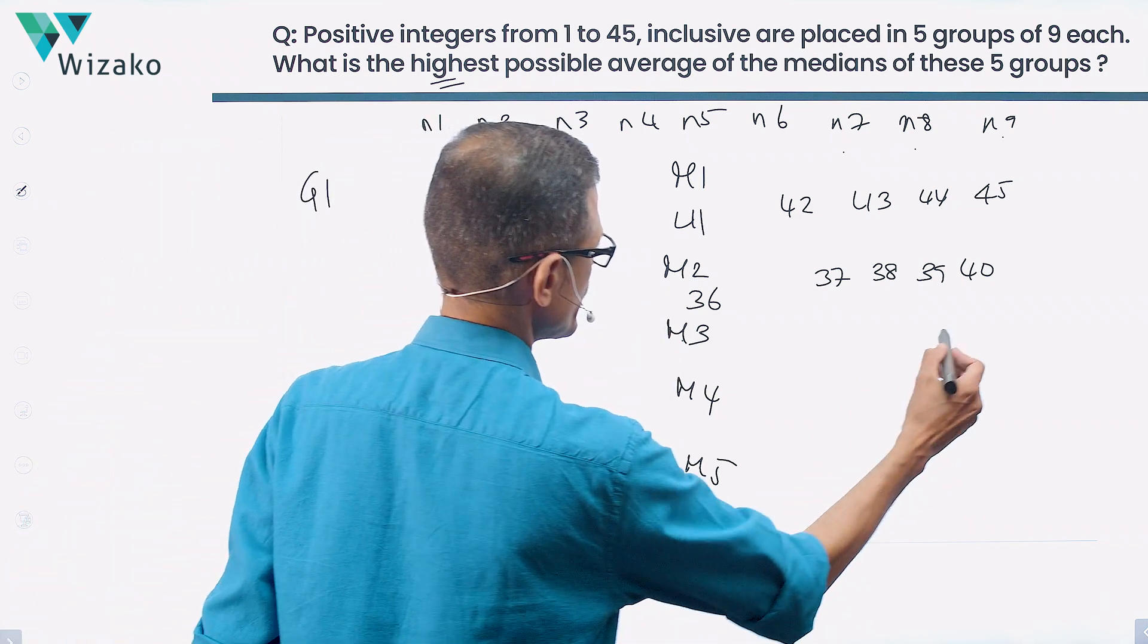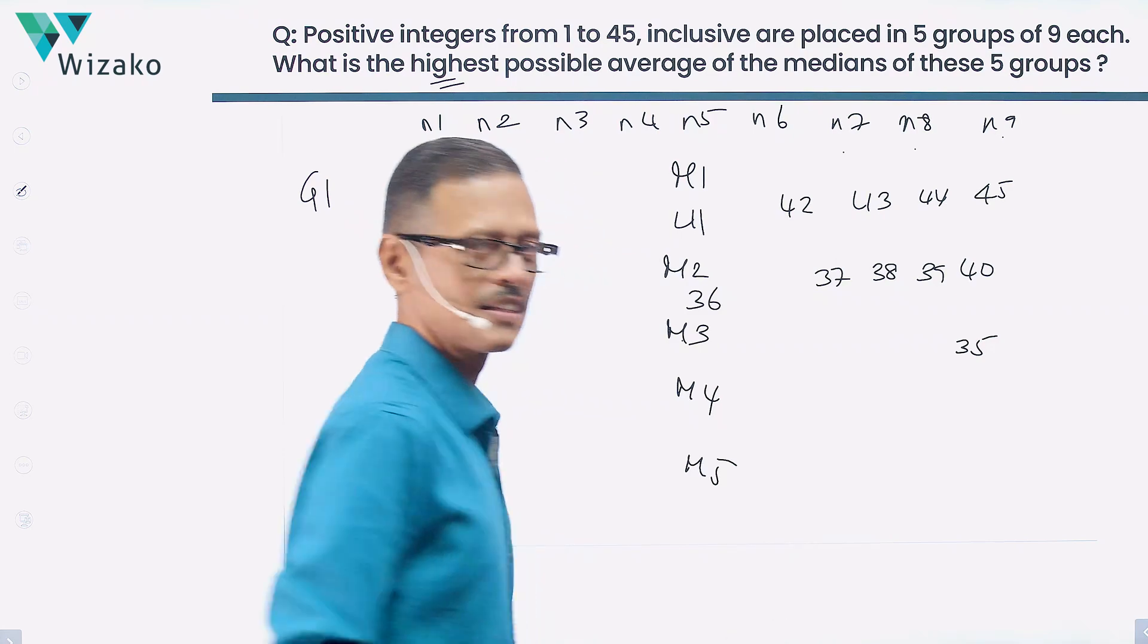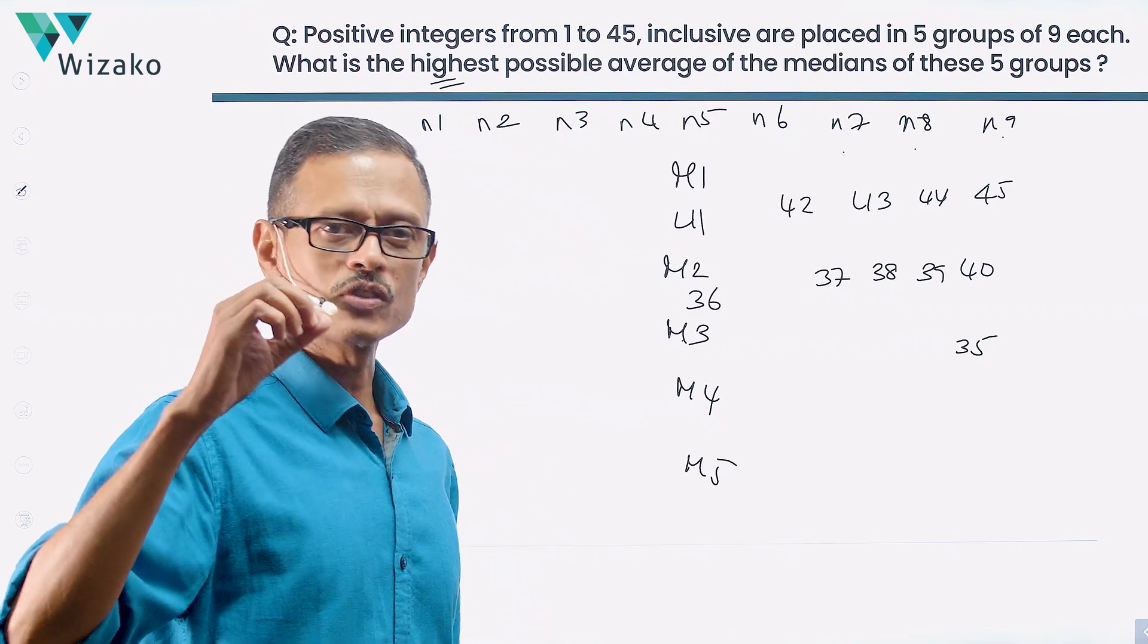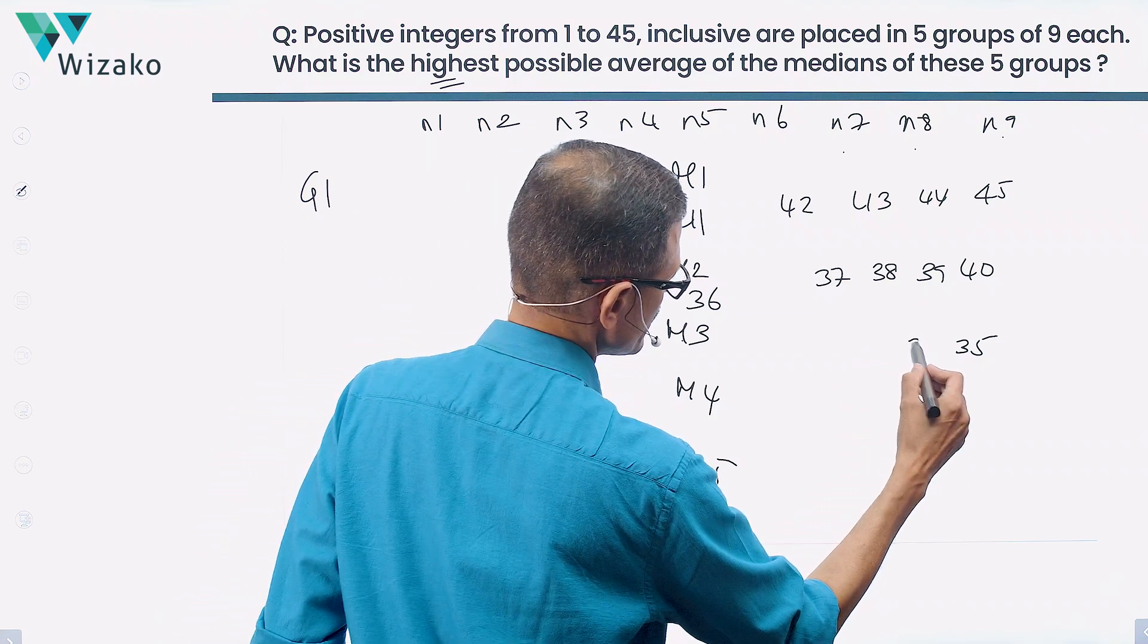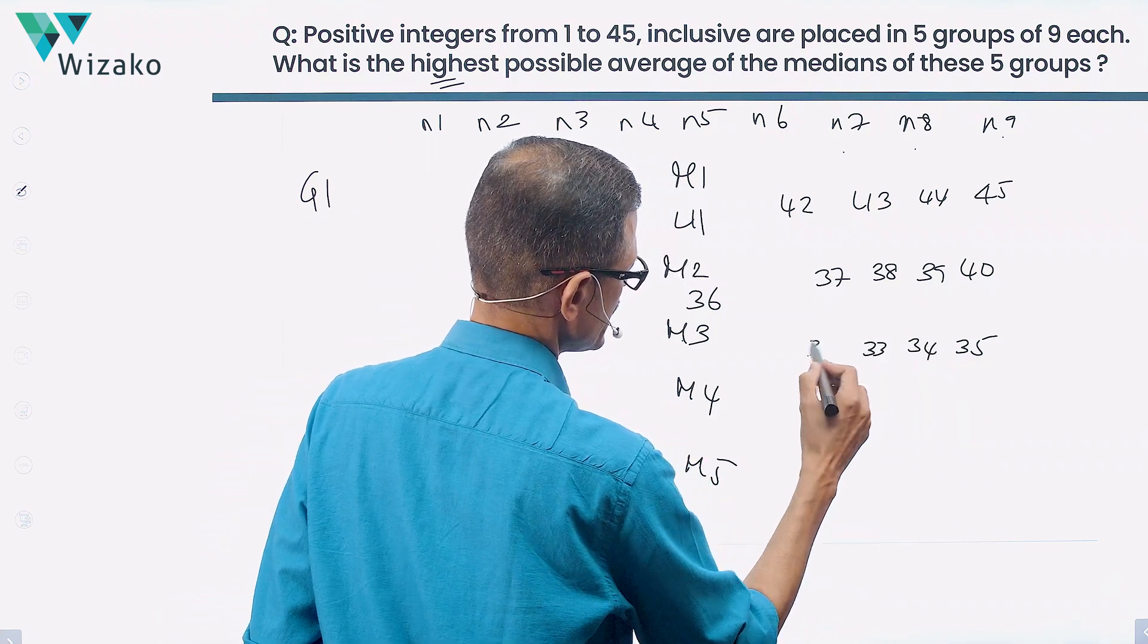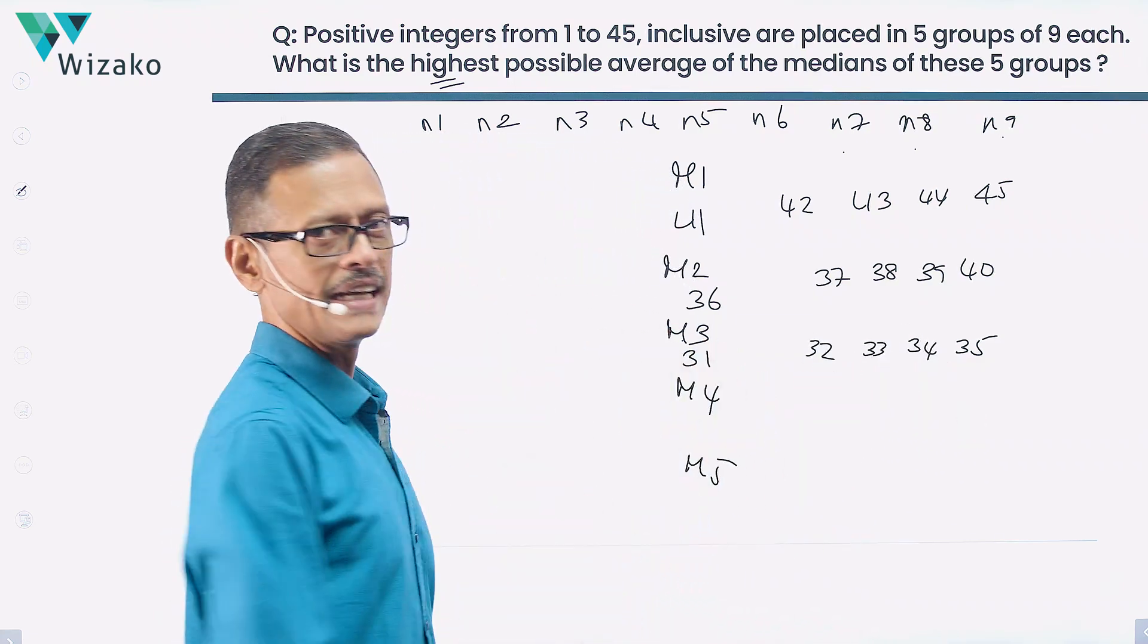Moving to the third group, we're essentially going to start with 35. Of the numbers left out, we have numbers from 1 to 35 left out for us. Let's keep the highest five in this set: 35, 34, 33, 32, 31 becomes the median for the third set.